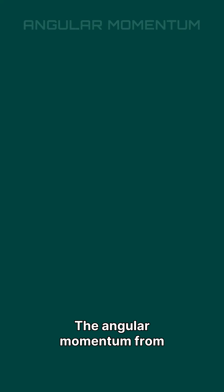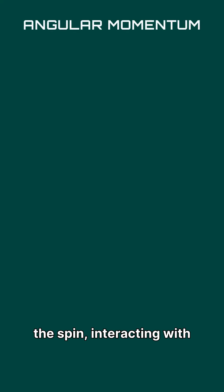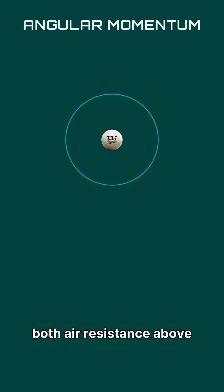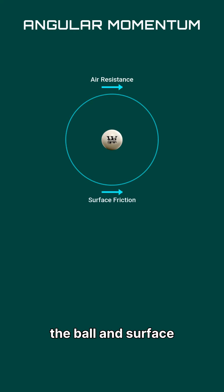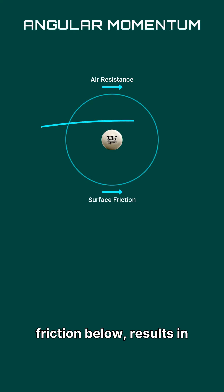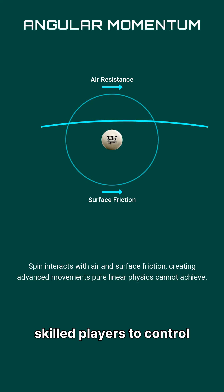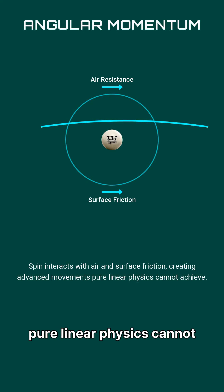The angular momentum from the spin, interacting with both air resistance above the ball and surface friction below, results in these advanced movements, allowing skilled players to control outcomes in ways that pure linear physics cannot achieve.